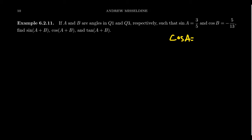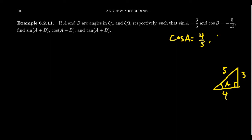We know sine of A — so what's cosine of A? Thinking about our right triangle diagrams for angle A: if sine is 3 over 5, that's opposite over hypotenuse, and by the Pythagorean equation the adjacent side is 4 — this is a 3-4-5 triangle. Since we're in the first quadrant, the x-coordinate is positive, so cosine of A equals 4 fifths. Tangent of A equals 3 fourths.